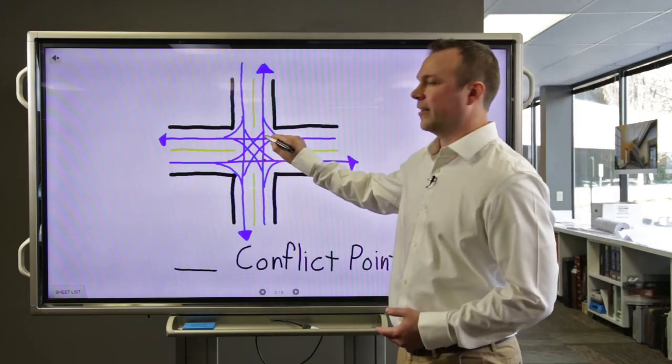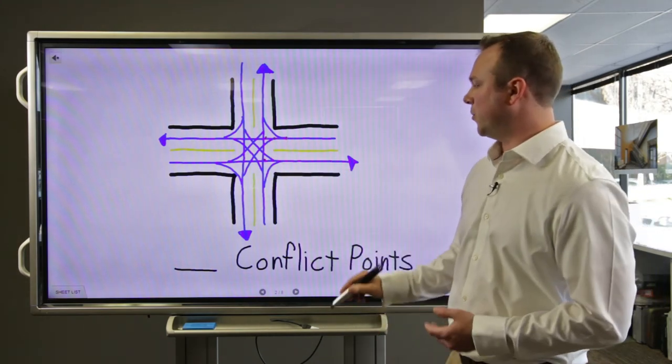If we count up all the conflict points in a traditional intersection, there's a total of 32.